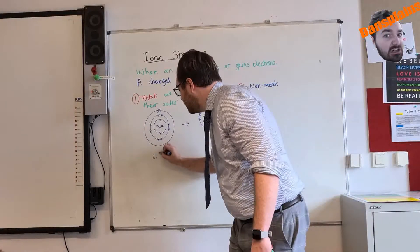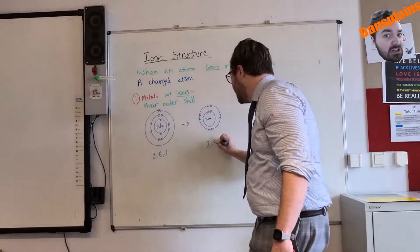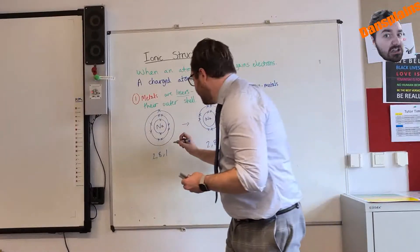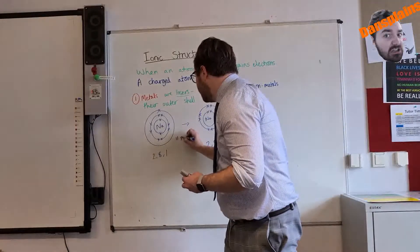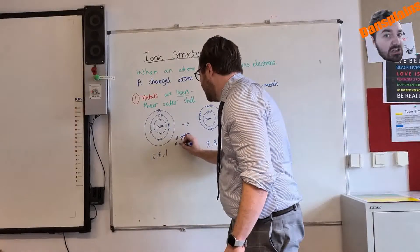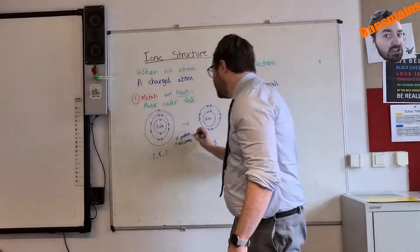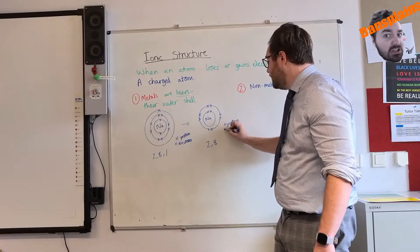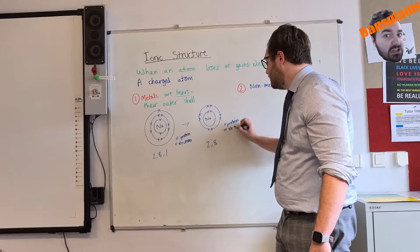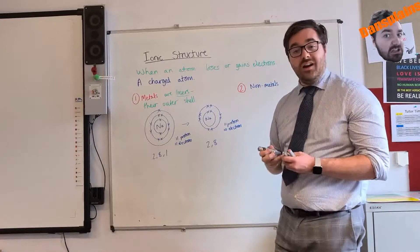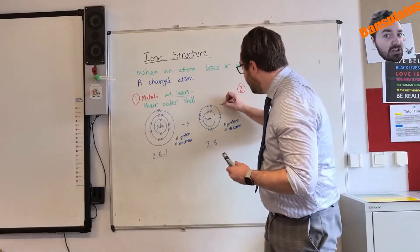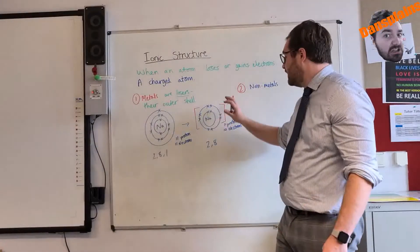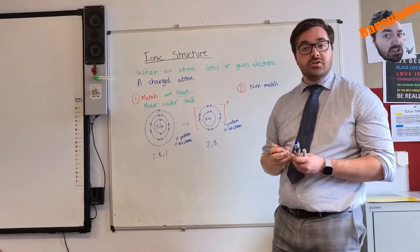So we have 2, 8, 1 becoming 2, 8. Now this means with sodium I have 11 protons and 11 electrons. Suddenly I have 11 protons and 10 electrons. So if I have lost a negative charge, that gives me a positive charge, which is what we put in these brackets here. It is a plus 1 charge. I don't have to put the 1.